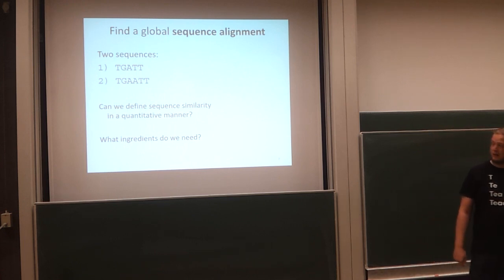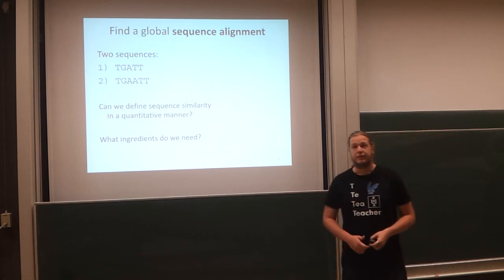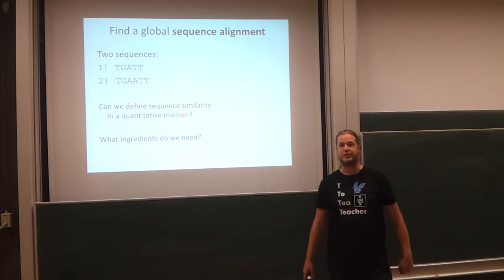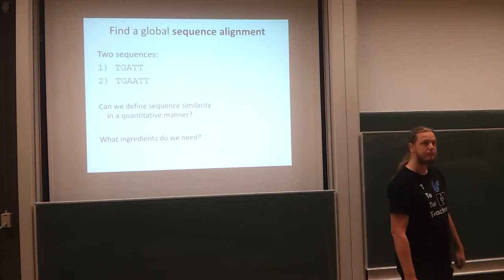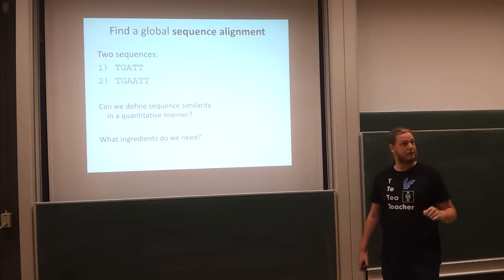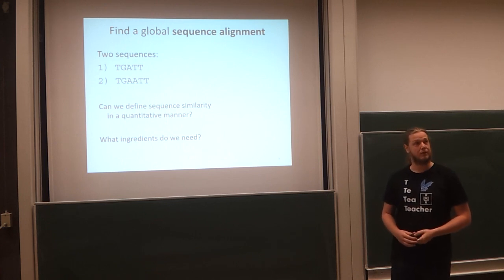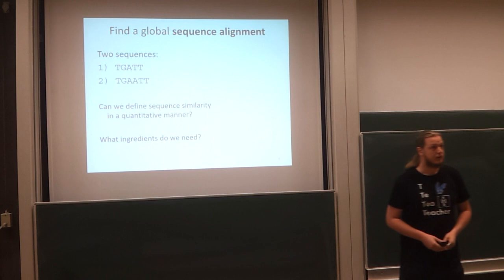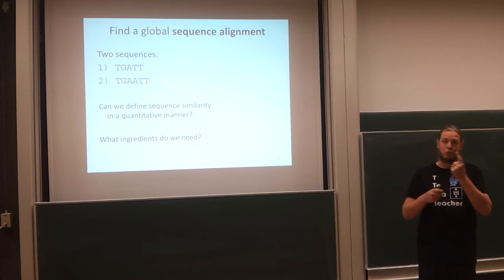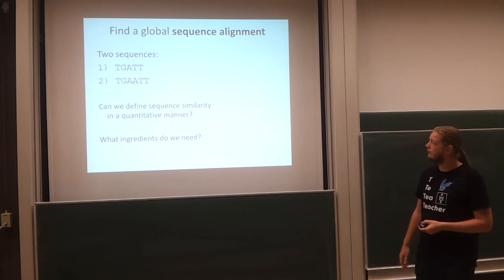We've already started thinking about this, but can we quantify how similar these sequences are? What do we need, on top of the observation that they are different, to come up with how similar these are in a number? A scoring method. Yes, very good. I saw a finger in the back. Any input on what that scoring method might look like? Putting some value on every insertion, deletion, or distance. Very good. What you're thinking of is the edit distance, right? Where we take a distance of unit one for either an insertion, a substitution, or a deletion.